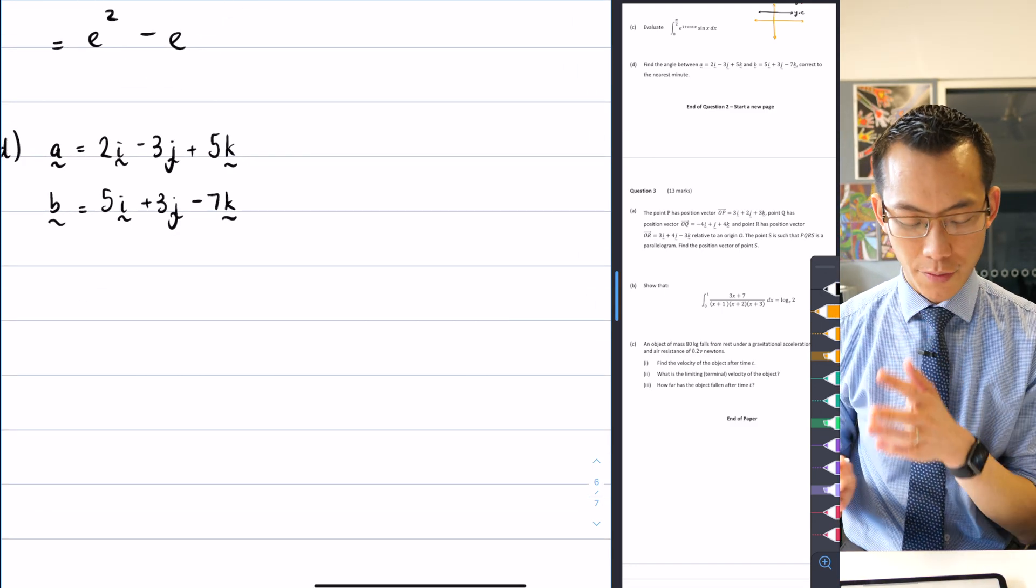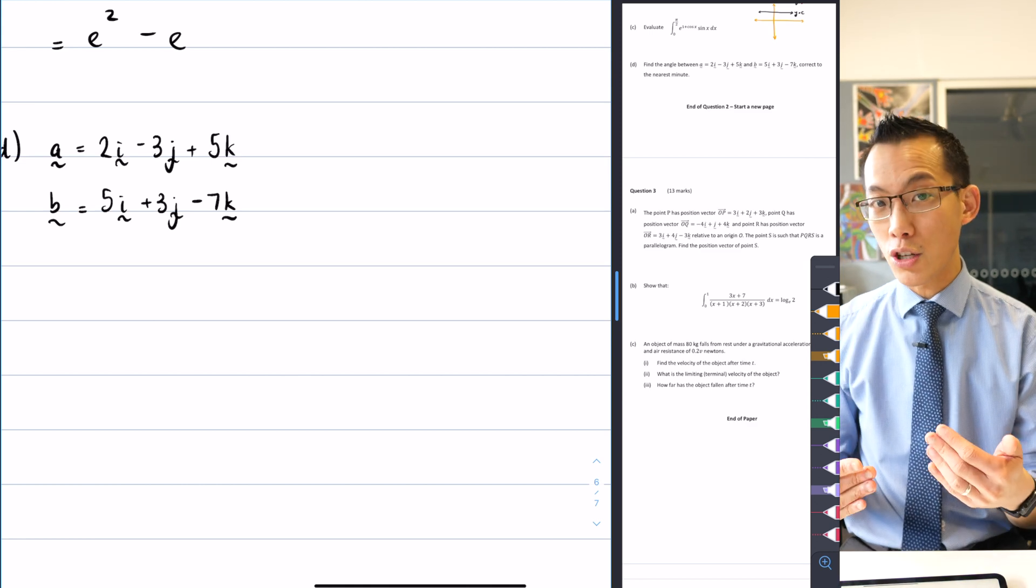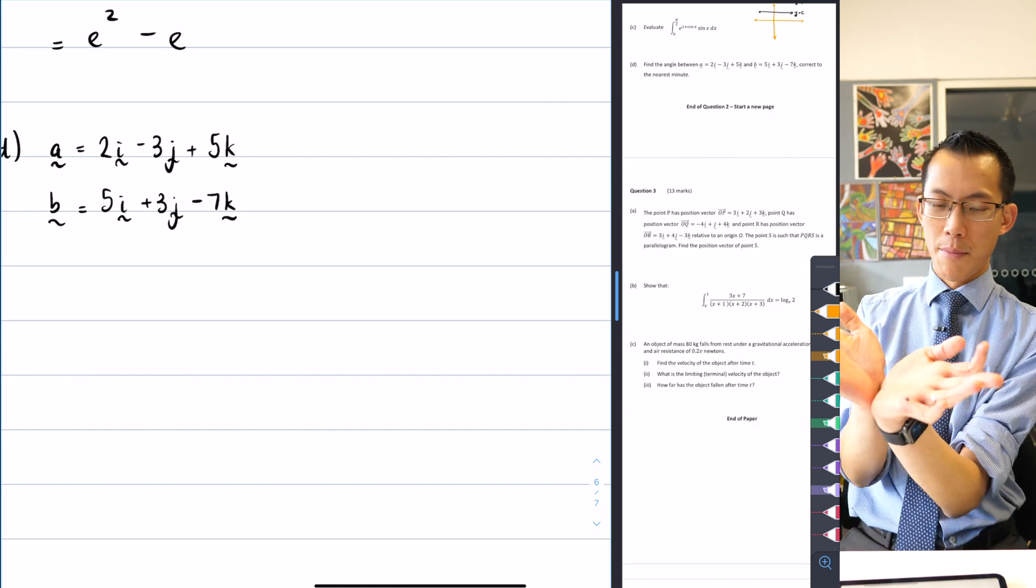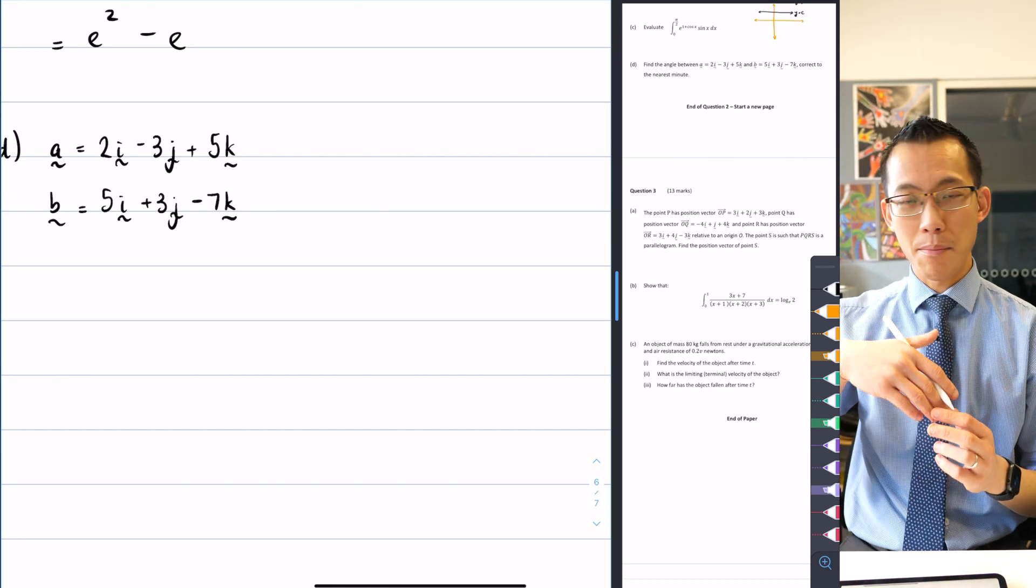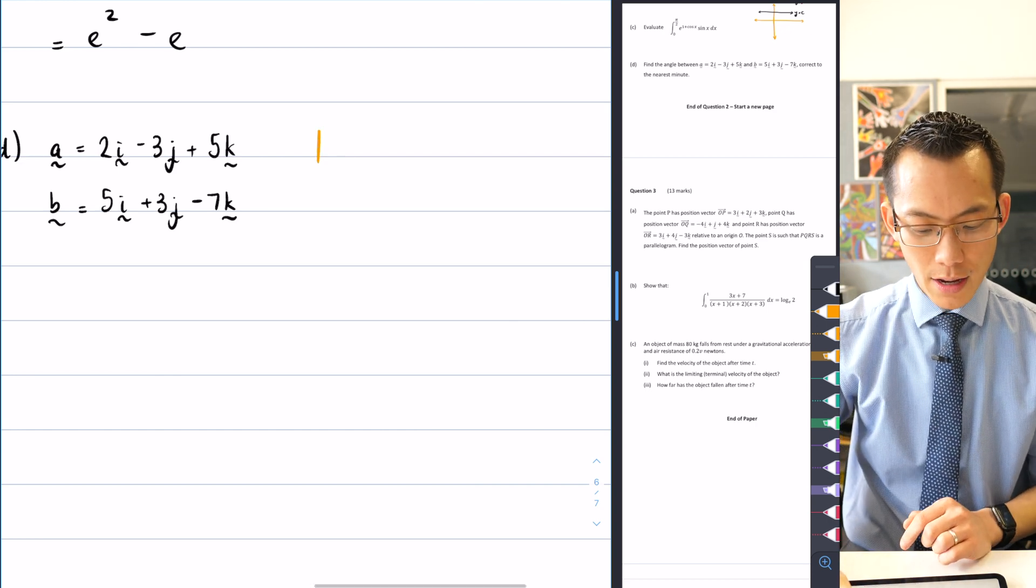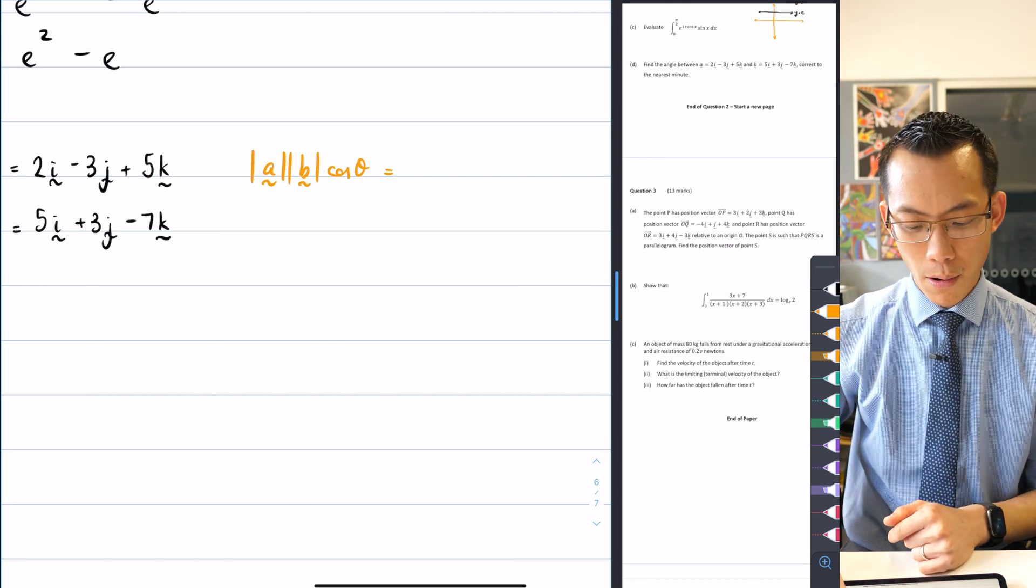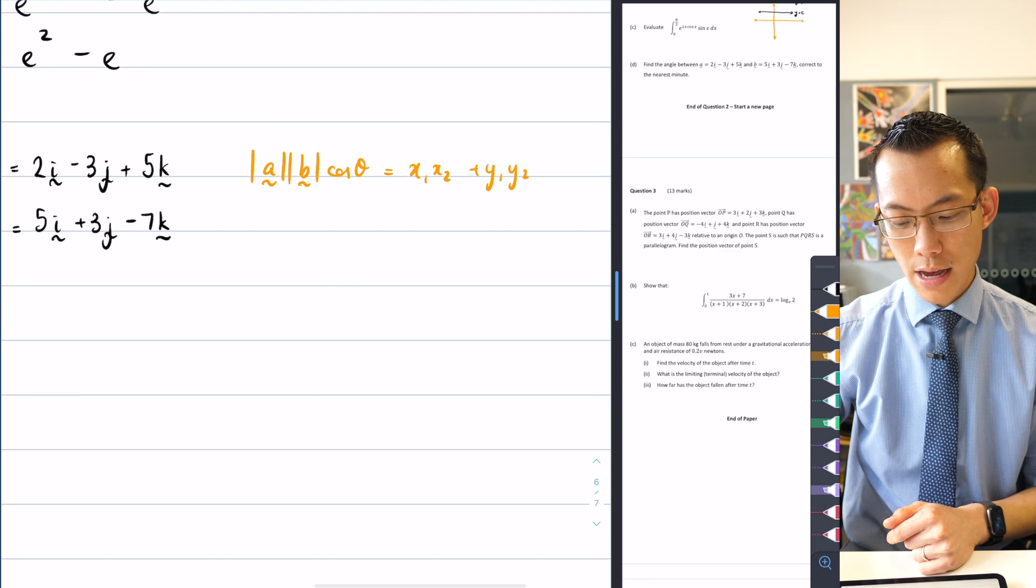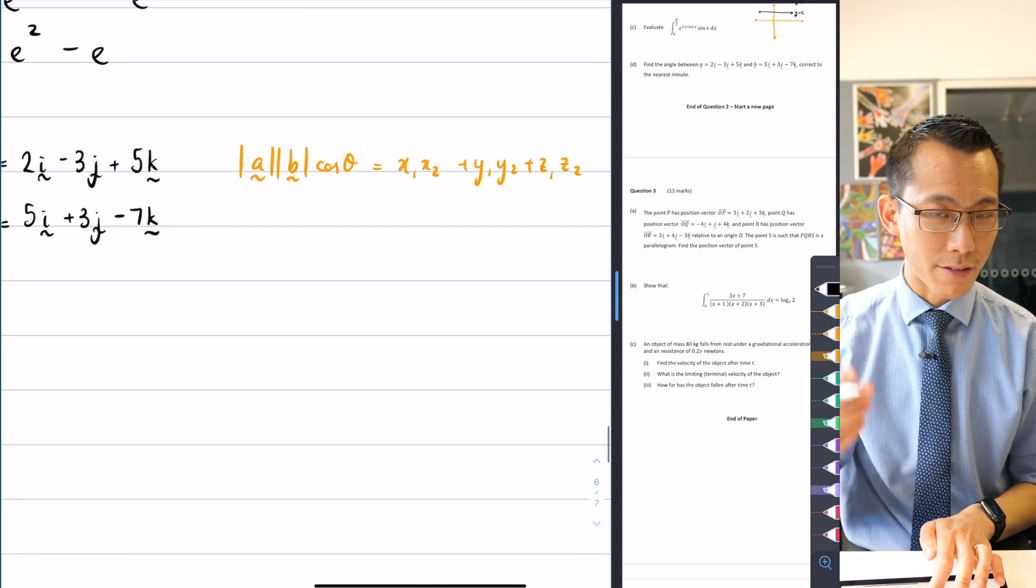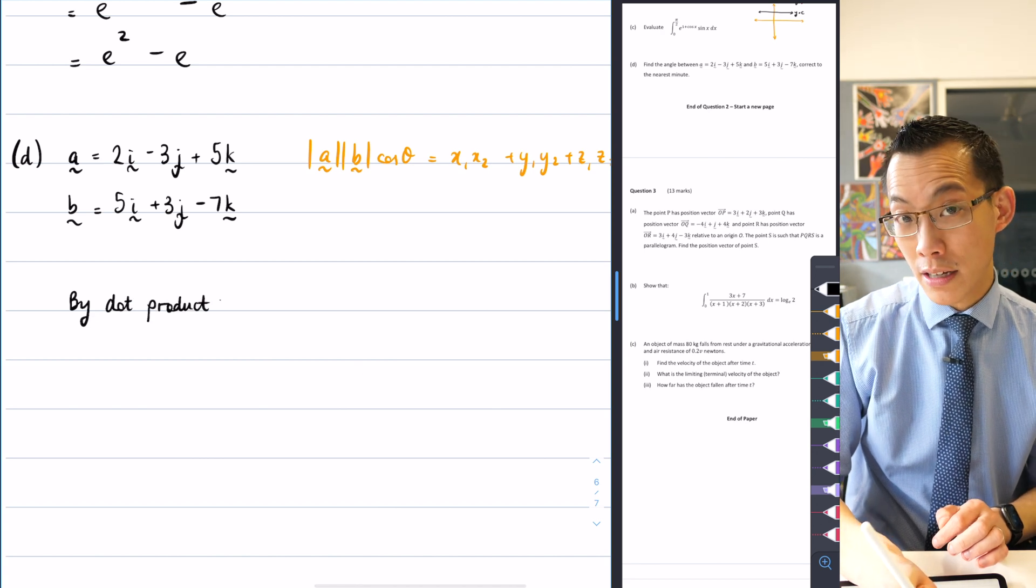Find the angle between them. Let's have a go. Part D. The first thing I'm going to do is I'm just going to write down the two vectors in question. So A is going to be 2i - 3j + 5k. And then B is designated by 5i + 3j - 7k. All right. Now, for the next part, everyone likes to write this a slightly different way, but I'm just going to show you the way that I like to think about it. I always go back to the original definition for the dot product and the fact that we can get at the dot product in two different ways. By the dot product...